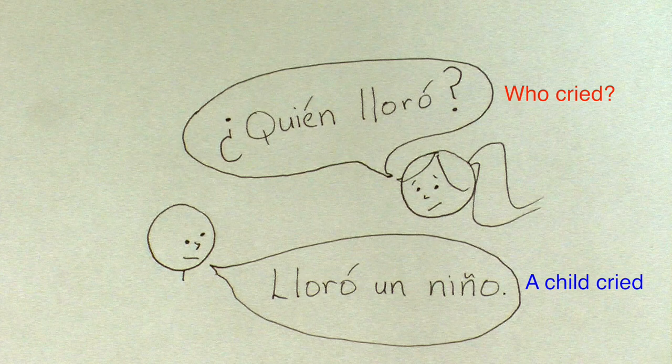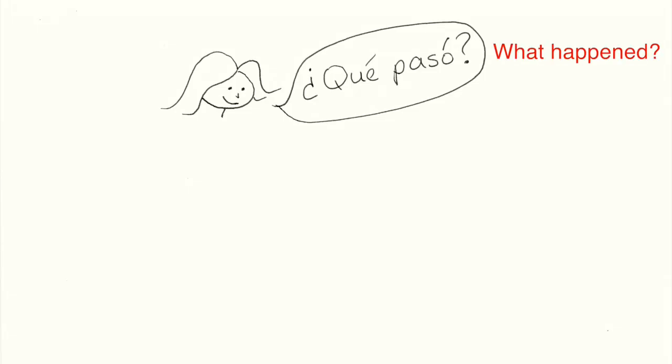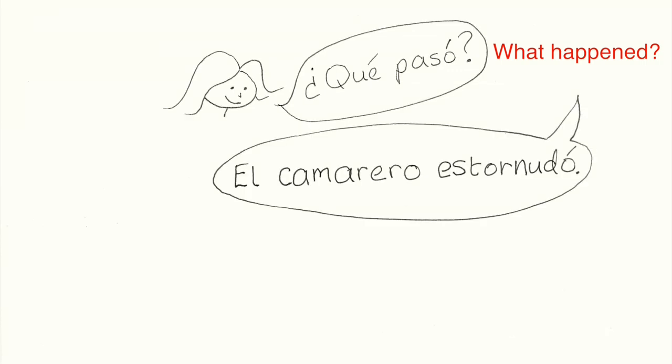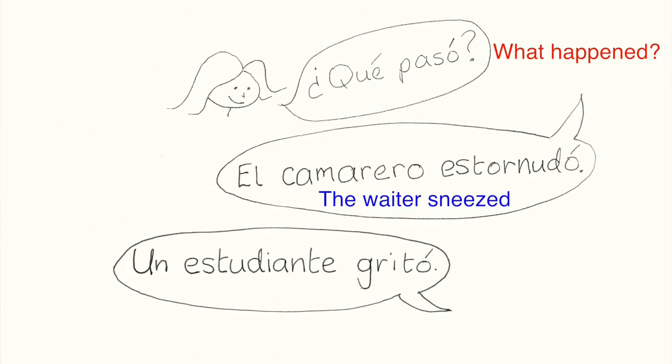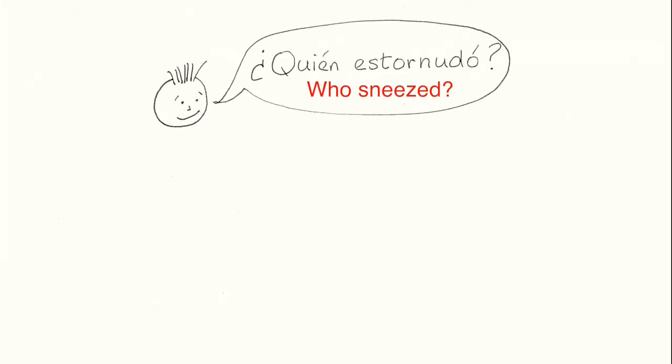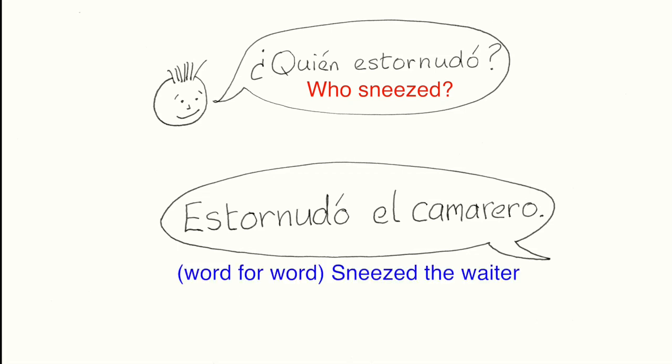So far, so good, right? If the question is ¿Qué pasó?, or what happened, then the answer makes the event prominent by putting the event, which is the part of the sentence containing the verb, near the end of the sentence. The result is subject-verb word order. But if the question is ¿Quién estornudó o gritó?, or who sneezed or shouted, then the answer makes the person who did the action prominent by putting the subject near the end of the sentence. The result is verb-subject word order.